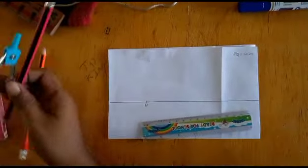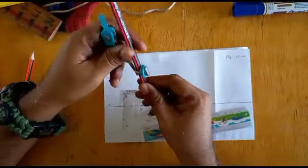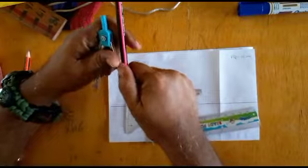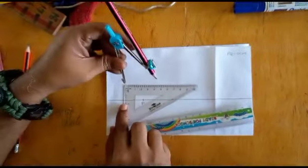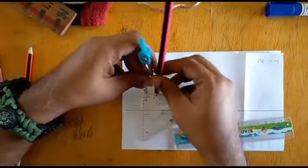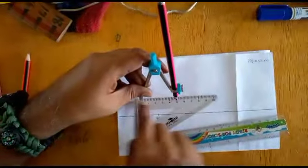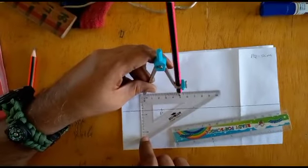Next, using any ruler that you have, put your pointer, make sure you adjust your compass, tighten it, take the pointy part of it and rest it on where zero is, which is that line. Open it until the two points are five centimeters away from each other.